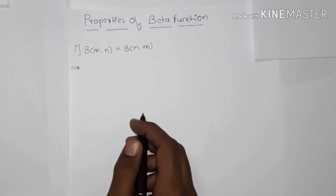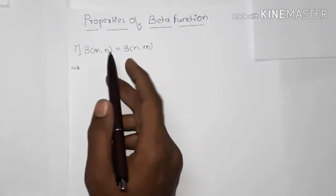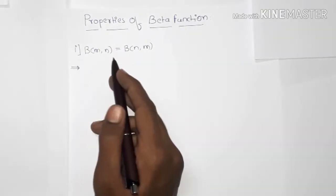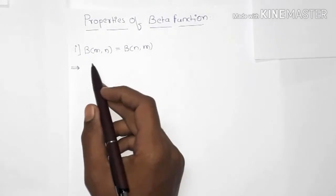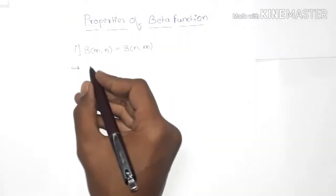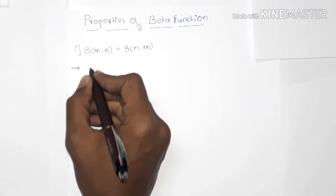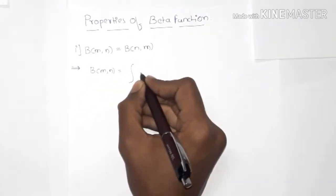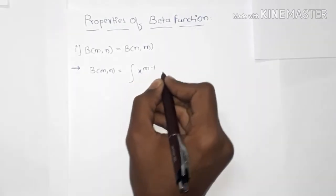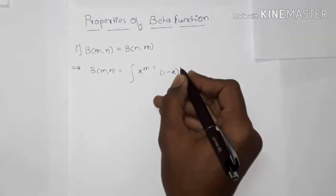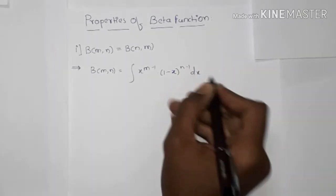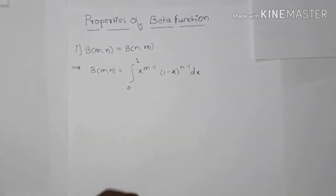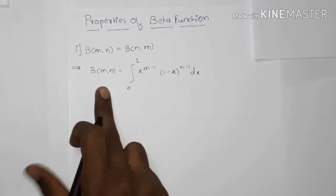Now let's move on to properties of beta function. The first property is beta(m,n) is equal to beta(n,m). Beta(m,n) is equal to the integral from 0 to 1 of x raised to the power m minus 1 into 1 minus x raised to n minus 1 dx. This is the formula for beta(m,n).